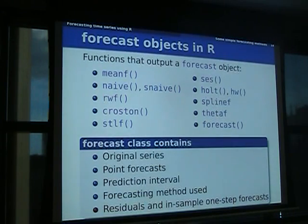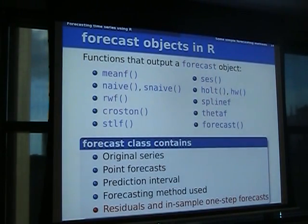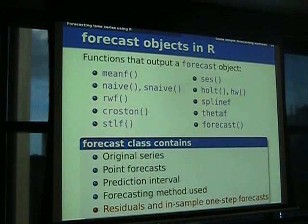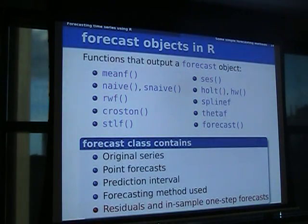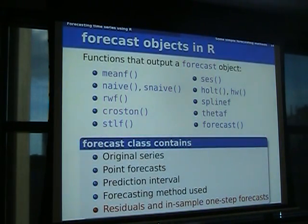There's a lot of other forecasting stuff in R that other people have written that don't have this forecast class. But if you use the forecast() function on any other object, it'll convert it to this class. So it doesn't matter if you want to use structs, TS, or Andrew Harvey's state space models — you can still get it in the same class and do all the same analysis.